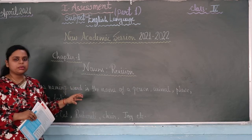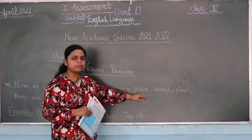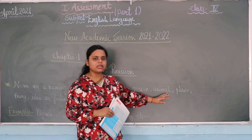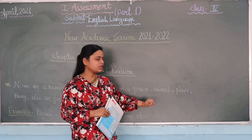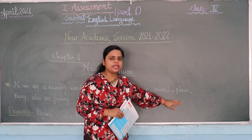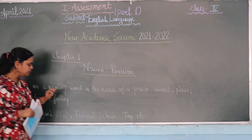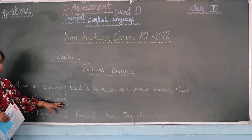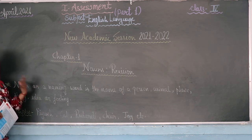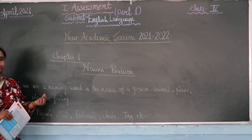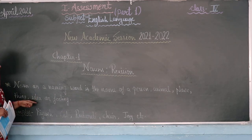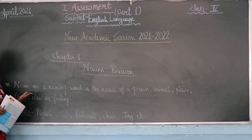Noun, meaning naming words, can be the name of any person, any animal, any place, any thing, or any idea or feeling. Your feelings and emotions — what you are feeling — also have a name. For example: feelings, sadness, joy, happiness, or an idea like thinking something great.